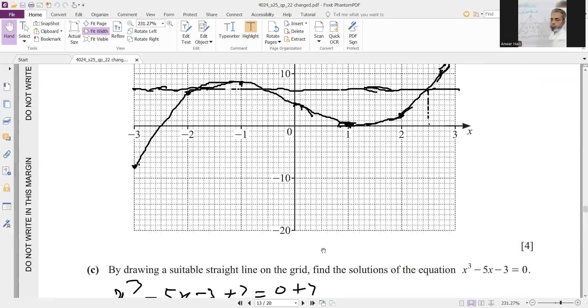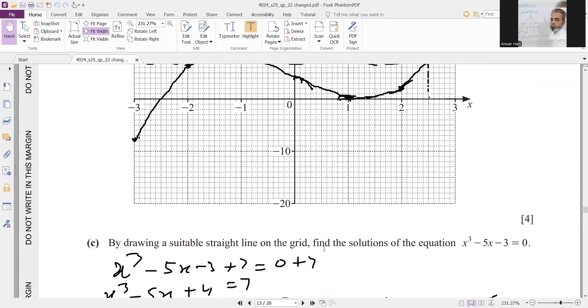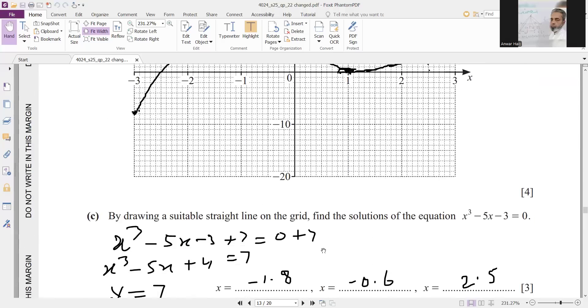And then the next part, he is asking by drawing a suitable straight line on the grid, find the solutions of the equation. So your general equation is x cube minus 5x plus 4. For making it plus 4, this is negative 3. So you will add 7 on both sides. When you will add 7 on both sides, then you will get x cube minus 5x plus 4 equals 7.